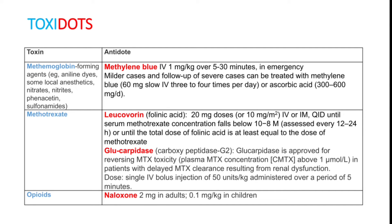Methotrexate is an anti-rheumatoid drug. The main problem is that if taken without folic acid, the patient can have severe neutropenia. You will have to treat with leucovorin or folinic acid — 20 mg IV until the methotrexate concentration falls below 10⁻⁸. Another drug is glucarpidase, not available in our country — single IV bolus injection, 50 units per kg over 5 minutes.